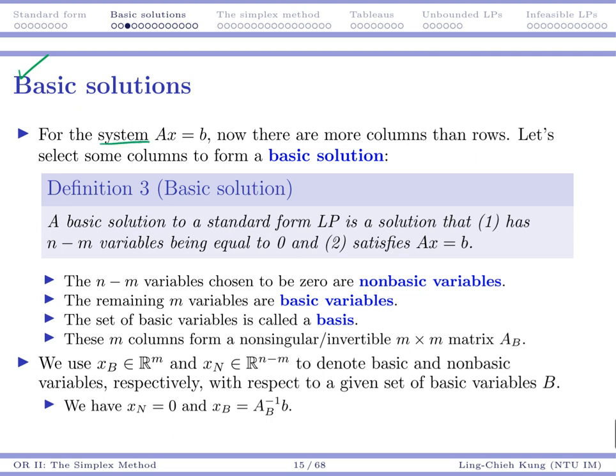Given a system Ax equals b, now we know there are more columns than rows. So we're going to select some columns to form a basic solution.